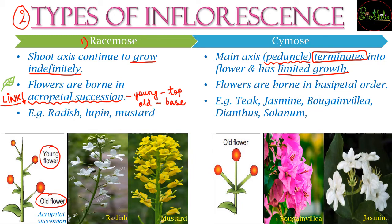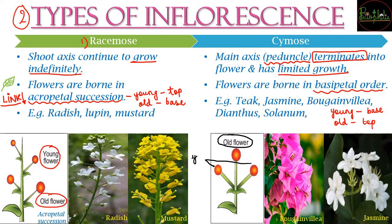The major difference in cymose inflorescence is that growth is limited. The second major difference is that flowers of cymose inflorescence grow in basipetal order — the opposite of acropetal succession. In basipetal order, the younger flowers are at the bottom and the older flowers are at the top. As you can see in the image, the older terminating flowers are at the top and the smaller, younger flowers are lower.